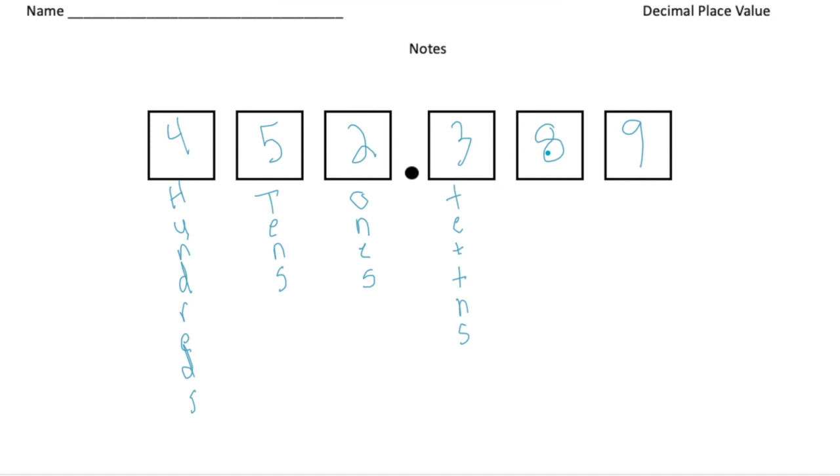To the right of that, we have the hundredths place, the hundredths place. So we have eight one hundredths. And then to the right of that, we have the thousandths place.